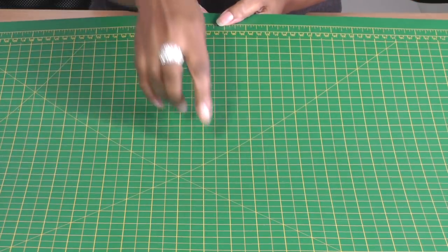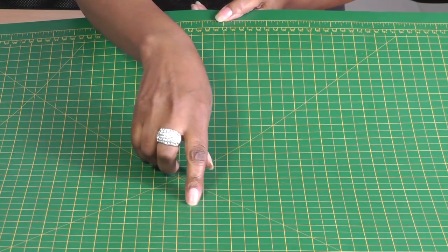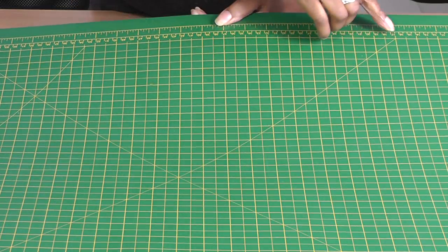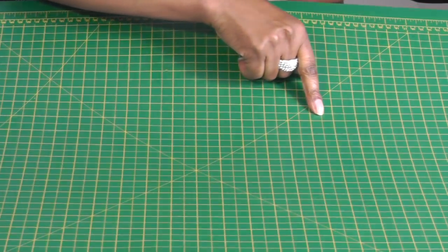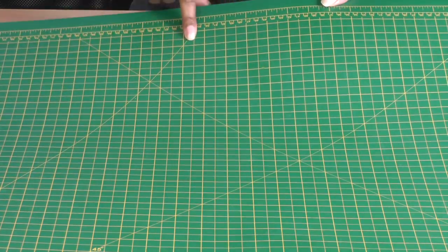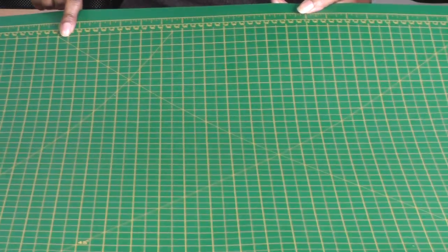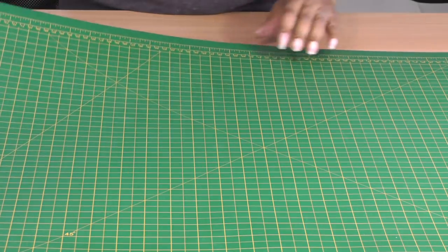There are little grids on here as well which are a centimeter. These little grids here, all these tiny grids are about a centimeter. So and it also has a 45 degree angle which was coming that way and a 60 degree angle as well.